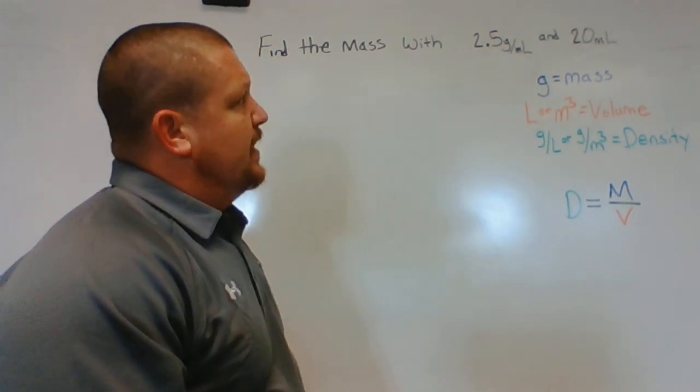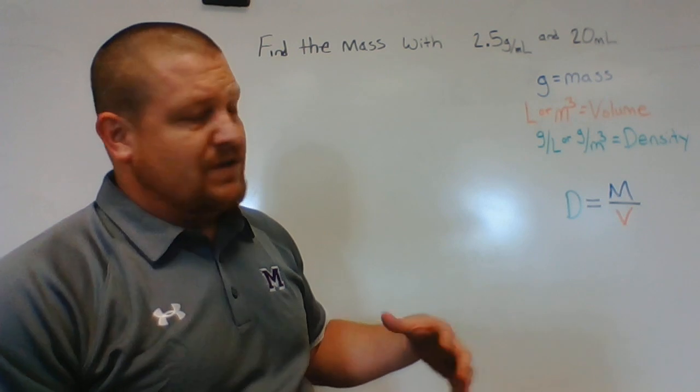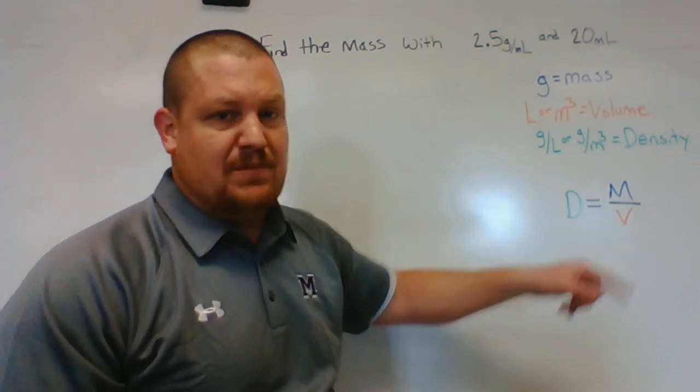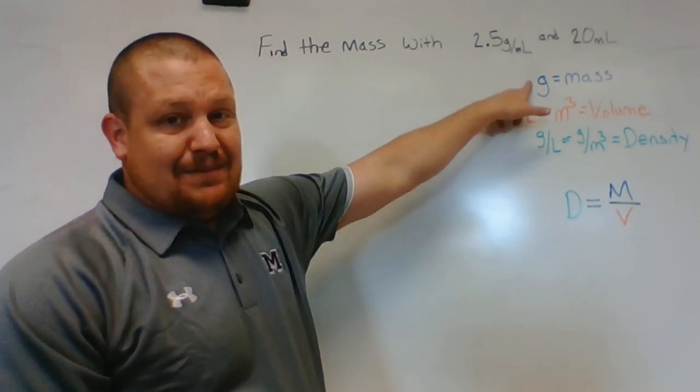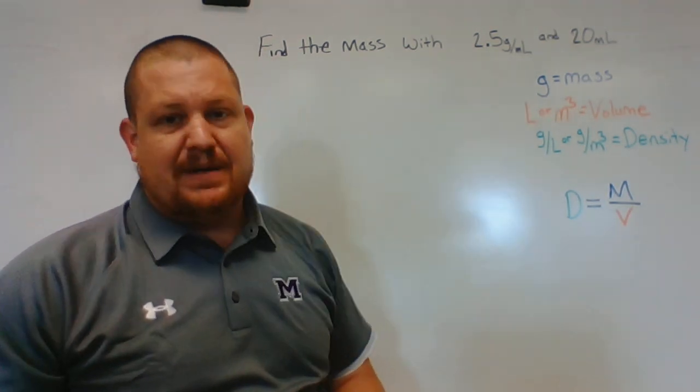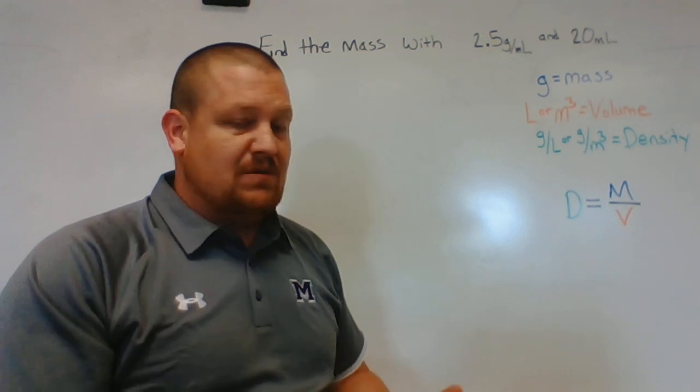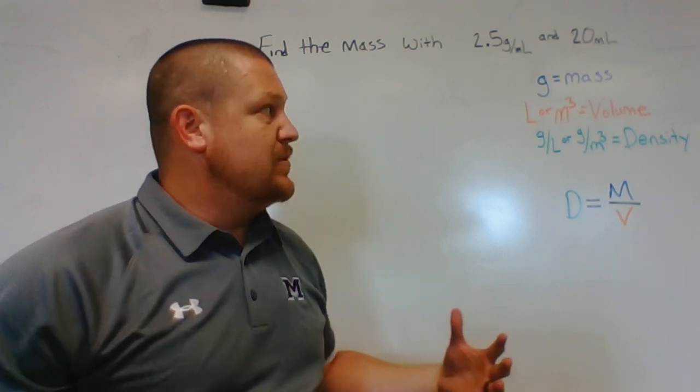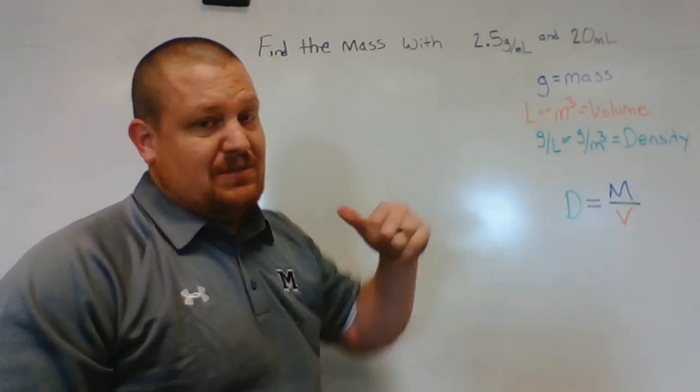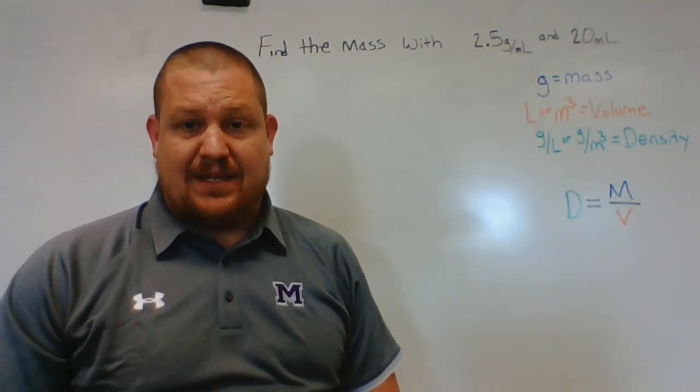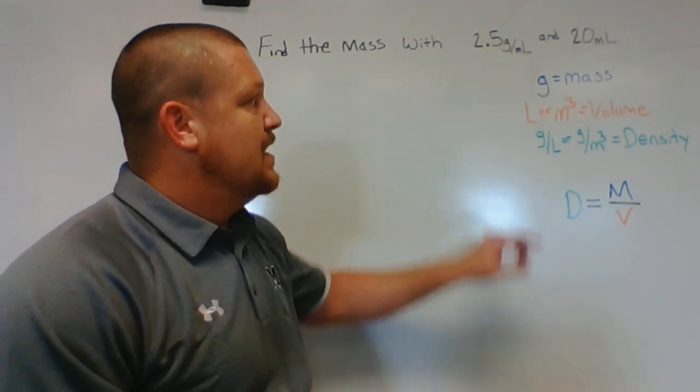Now speaking of units, for density we got three variables: density, mass, and volume. Grams is the unit for mass, so if you see grams—and it could be in any form, could be kilograms, micrograms, whatever you got—that's going to be mass. So you see that G, the grams, you should be ding ding ding, that's a mass right there. I know I can do something with that.